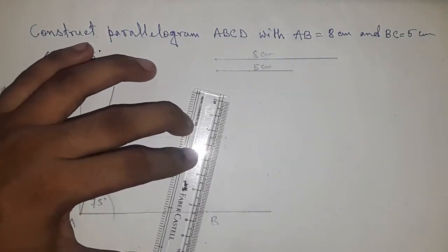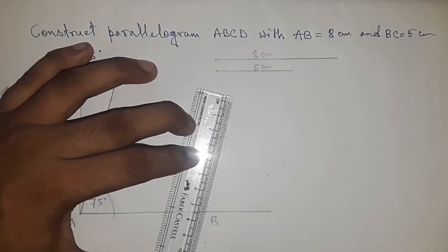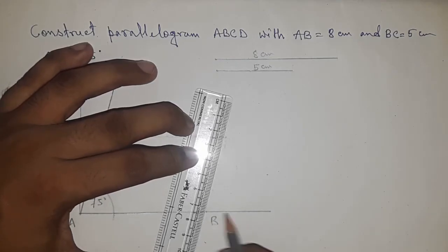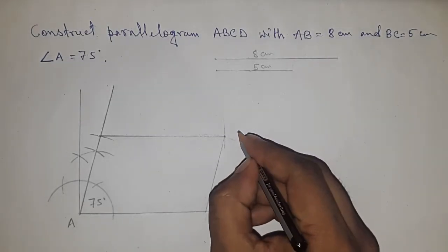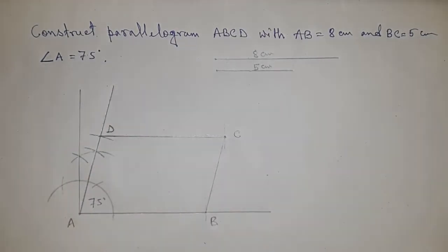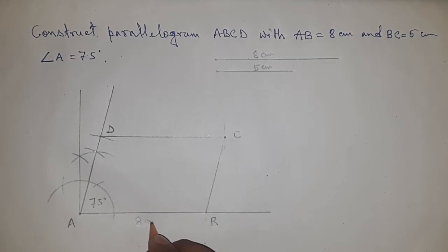And also joining this. So this is C point and this is D point. So ABCD is a parallelogram.